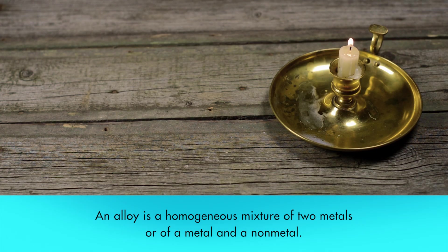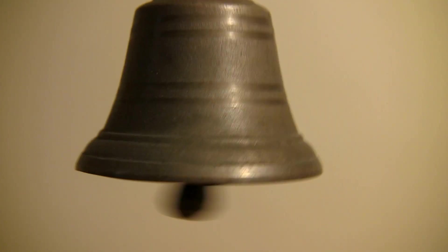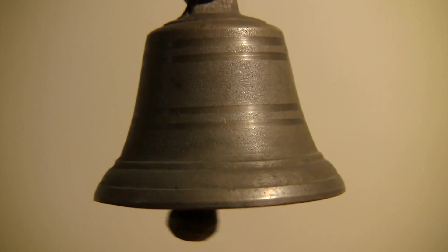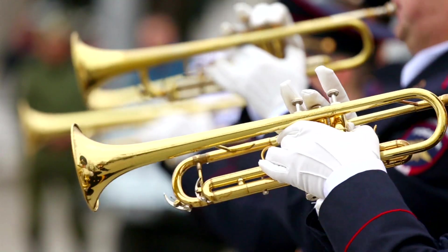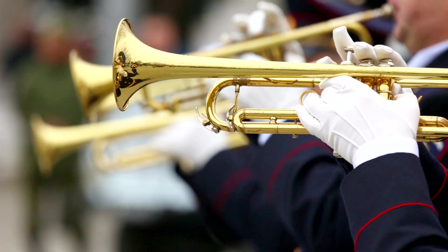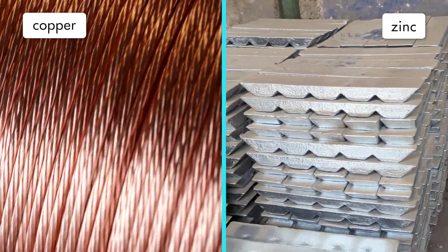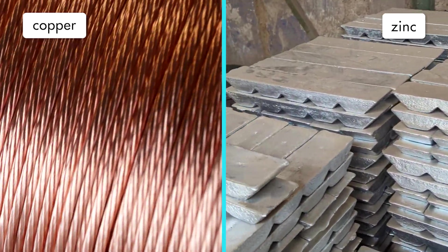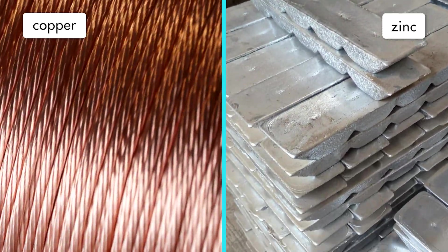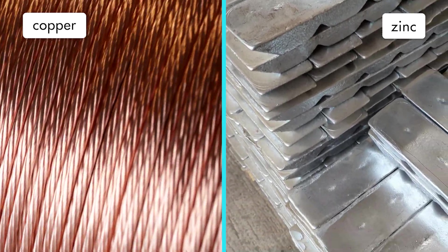An alloy is a homogeneous mixture of two metals or of a metal and a nonmetal. These objects are made of the alloy brass, which is a mixture of copper and zinc. Copper and zinc are melted and mixed together. The two molten metals evenly blend to form a homogeneous mixture. When the metals cool, the alloy exhibits properties of both metals.